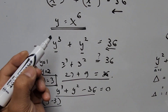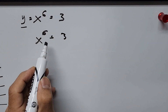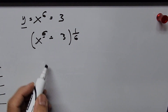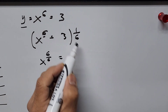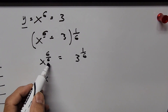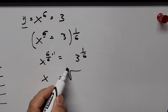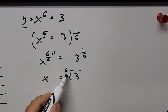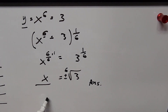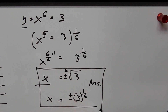Recalling that y = x^6, we have x^6 = 3. To solve for x, we raise both sides to the power of 1/6: x = 3^(1/6). Since the root is even, we get both positive and negative values. The final answer is x = ±⁶√3, which can also be written as x = ±3^(1/6).